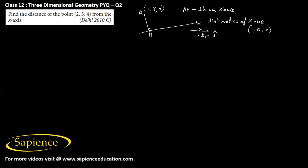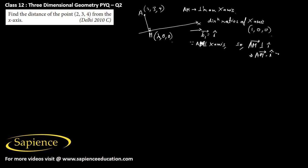Any point M on the x-axis will be of the form (λ, 0, 0). Since AM is perpendicular to the x-axis, we can say that AM vector is perpendicular to i-cap. It means that AM vector dot i-cap should be equal to 0.